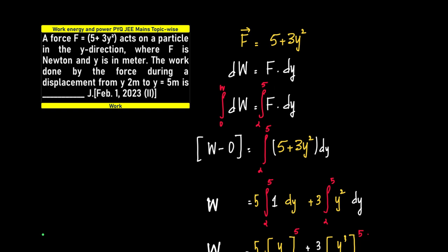We have got integral dW is W varying from 0 to 0, W to 0 is W minus 0. F is given to us as 5 plus 3y squared, which is 5 plus 3y squared dy.